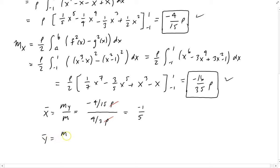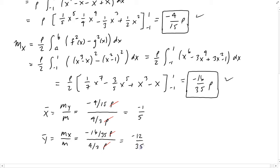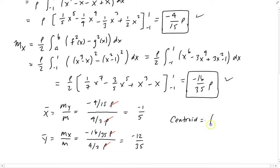For ȳ, it's the moment about x divided by the total mass. That's minus 16/35 times rho divided by the total mass. The densities cancel out, leaving minus 12/35. Therefore, the center of mass — or centroid — is equal to (minus 1/5, minus 12/35).